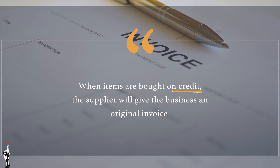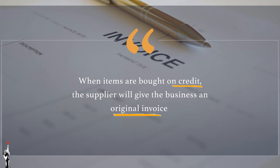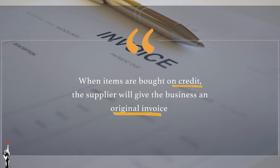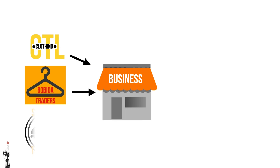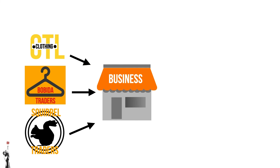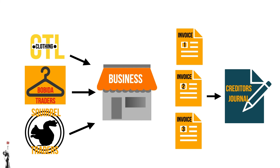When items are bought on credit, the supplier will give the business an original invoice. The business buys items from different suppliers, therefore different invoices with different invoice numbers will be received. The business will then renumber the invoice and record them in the creditors journal, which we will discuss in the next lesson.